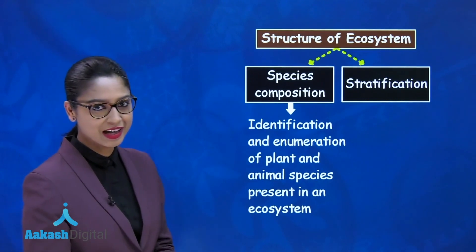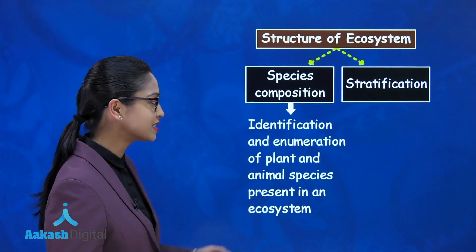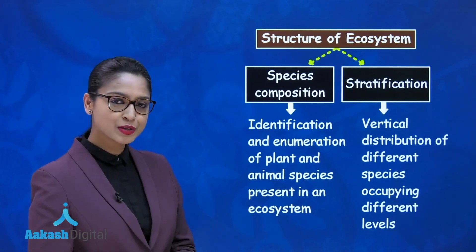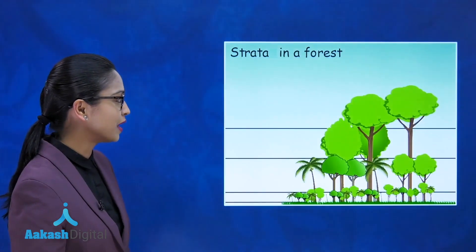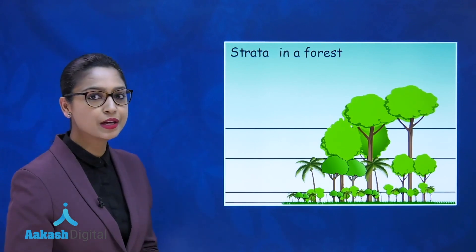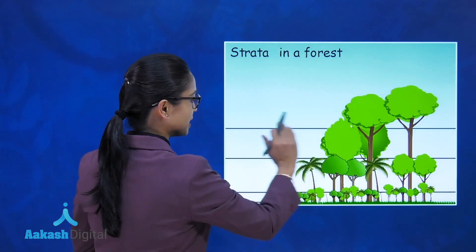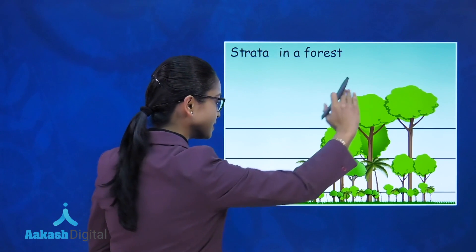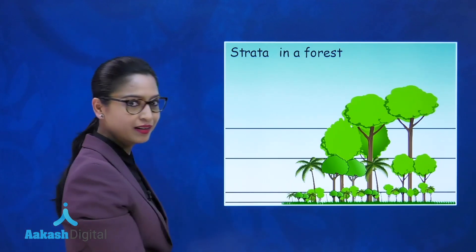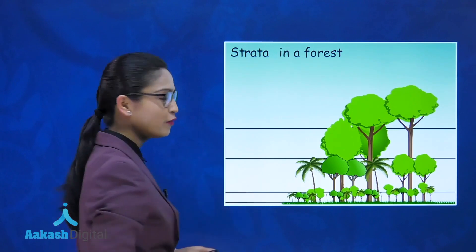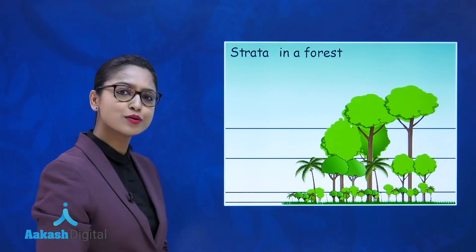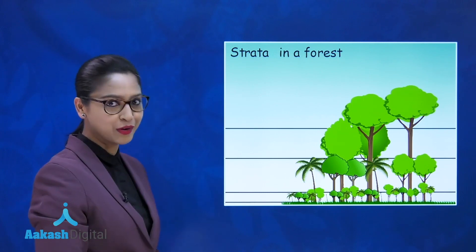Talking about stratification — it is the vertical distribution of different species occupying different levels. I'll show you a picture to understand. This is a forest, and the forest has many strata. We can see four different strata: the first is formed by the tall trees, the second by the shrubs, and the fourth strata is formed by grasses and herbs. This vertical arrangement shows how species live in an ecosystem, and such strata are also found in aquatic ecosystems.